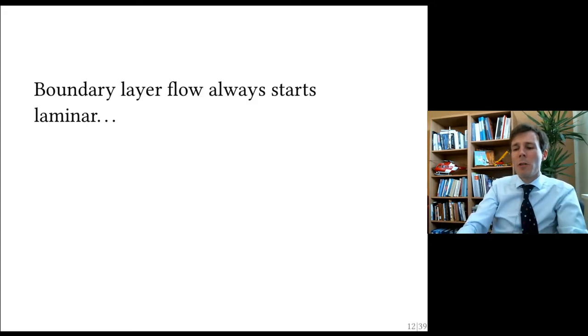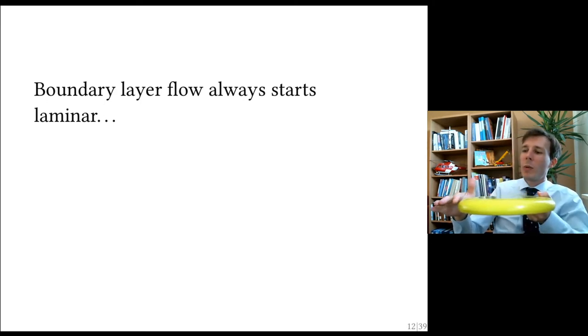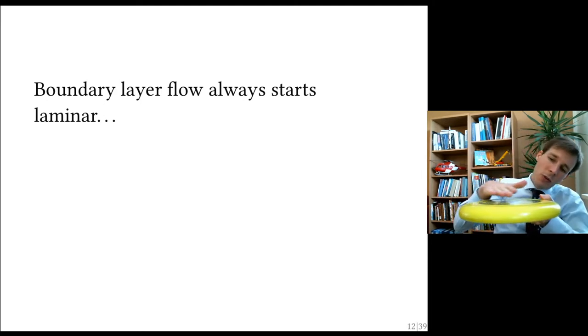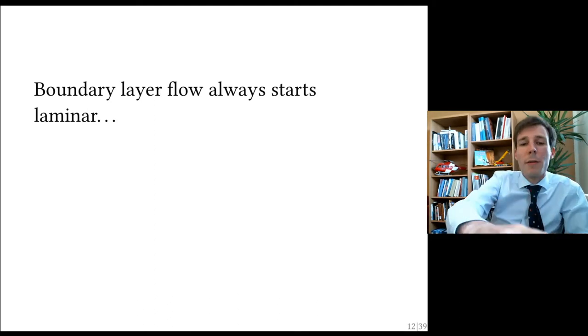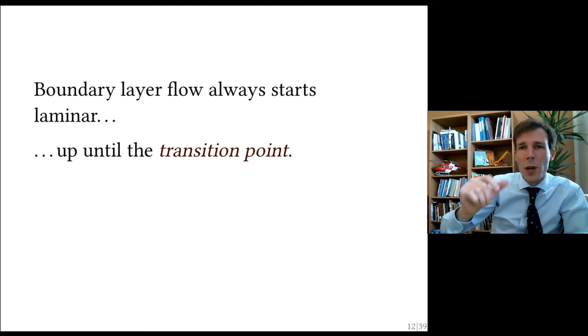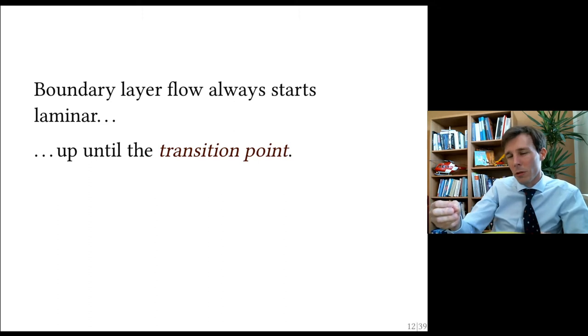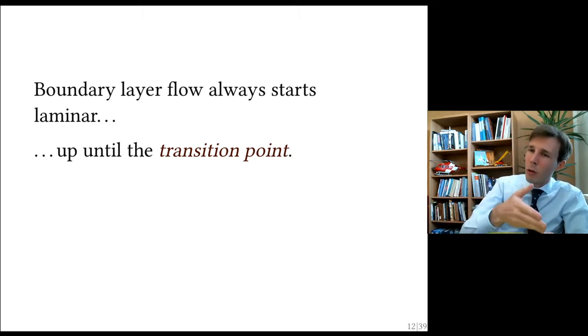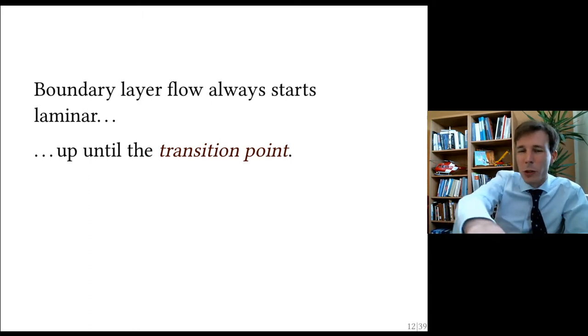Boundary layer always starts laminar. If you throw a frisbee like this with a very smooth body, it will start laminar. And then as you go down towards downstream, over the flow, then the boundary layer will transit. And by transit, we mean it's going to become turbulent. So from laminar to turbulent. And this point is called the transition point. And we also attempt to measure and to predict where the transition will happen.